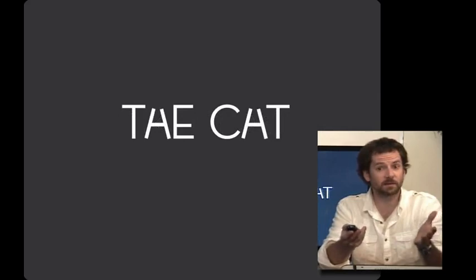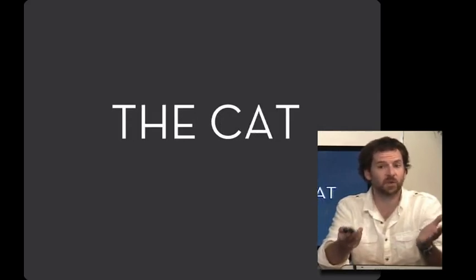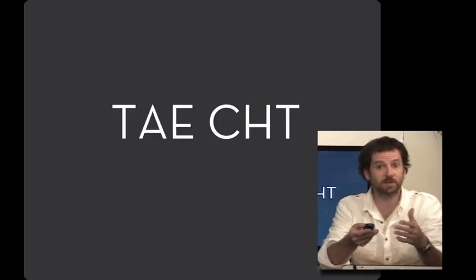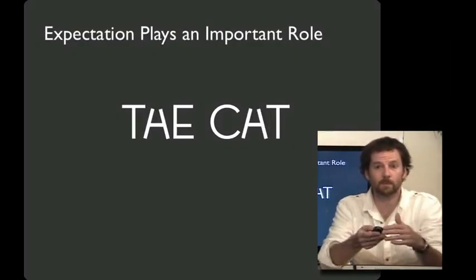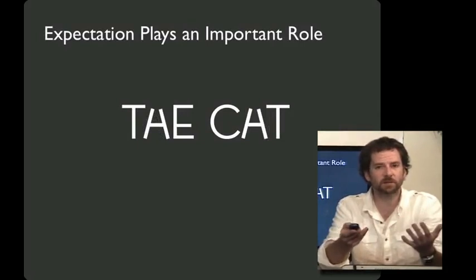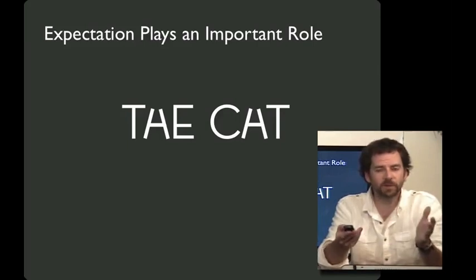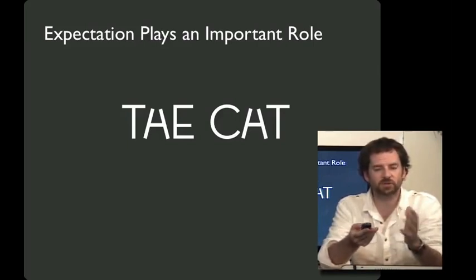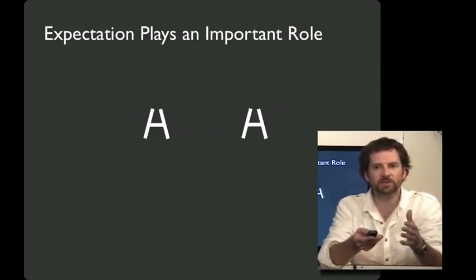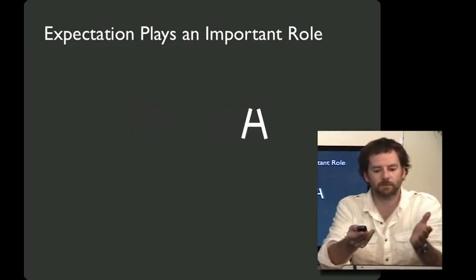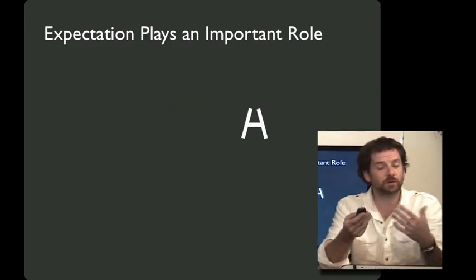Turns out that more information seems to be encoded in the top half of text than in the bottom half. And what does this say? I bet many of you saw it as the cat. And that's because expectation plays a really important role in what we read. And if you're really perceptive, you may have realized that those two middle letters are actually exactly the same letter. So the only difference is what you're expecting to see in each case. Your prior probability influences your interpretation.